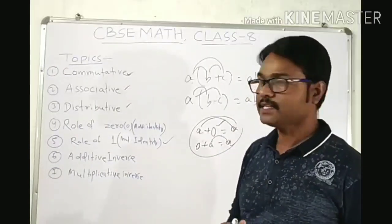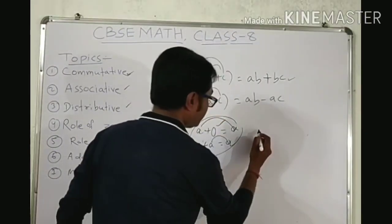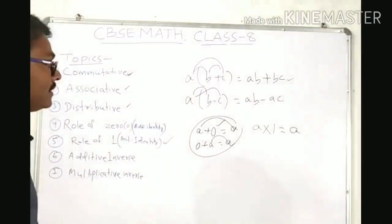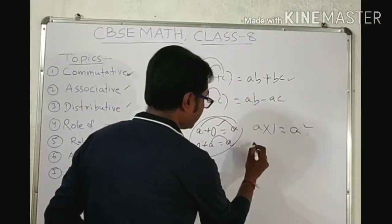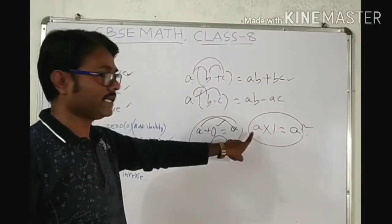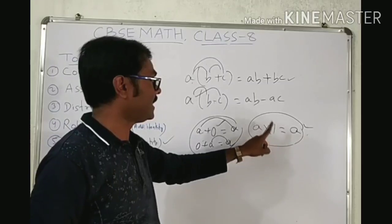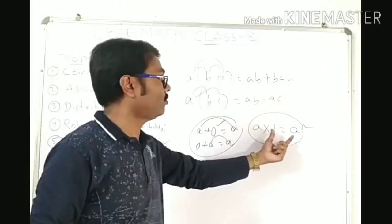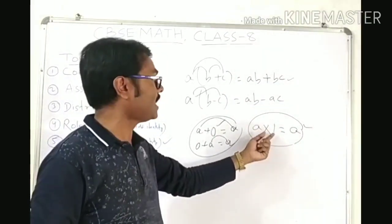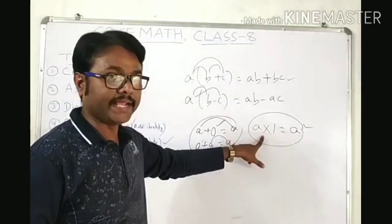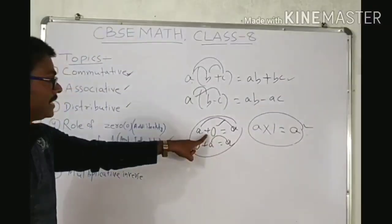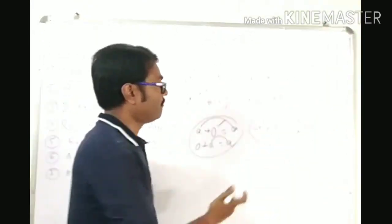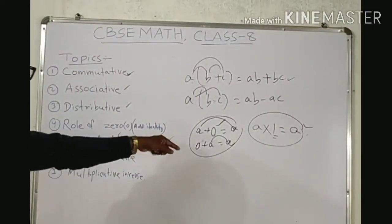Next one is multiplicative identity. Suppose A is a rational number. If you multiply 1, you get the same rational number: A into 1 equals A. When we multiply 1 with a rational number, the value does not change — it retains its identity. That is why 1 is the multiplicative identity. Since you are multiplying, it is multiplicative identity; since 0 involves adding, it is additive identity.